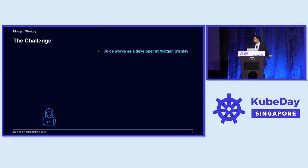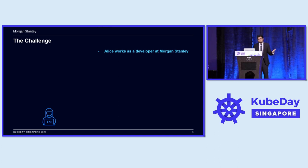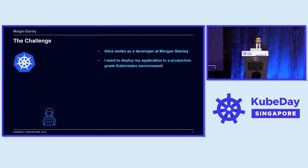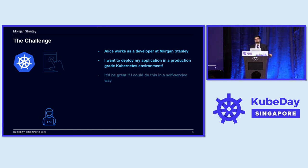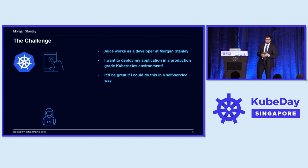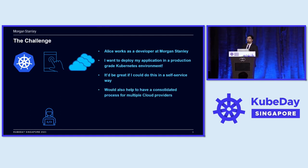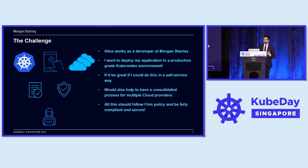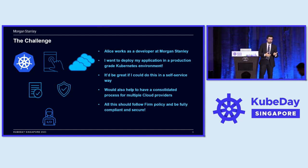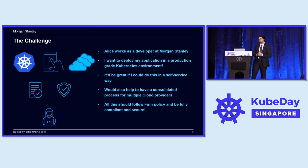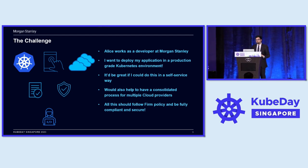We've got Alice here, who works as a developer at Morgan Stanley. She has a couple of requirements from the platform. All she cares about is that her application should be deployed in a production-grade Kubernetes environment. It would also be useful if she could do all of this herself without depending on an infrastructure team, and it would help if she didn't have to follow different processes for different cloud providers. And since we are a bank, it should follow firm policy and meet all security requirements enforced by the firm.